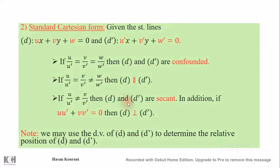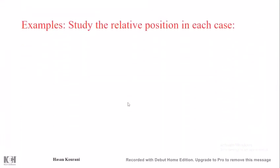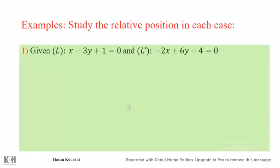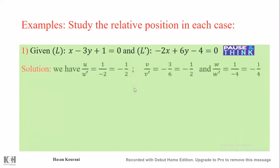That covers the standard Cartesian form. What about if both lines are in parametric form? We will see that later after this example. Study the relative position in each case. Given two straight lines L and L prime, written in standard form, let's find their relative position. Pause the video and try to answer the question on your own.